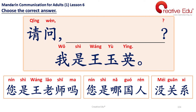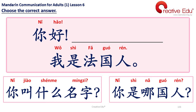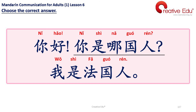Number 4: 请问，我是王玉英。Choices: 您是王老师吗？您是哪国人？没关系？Answer: 请问，您是王老师吗？Excuse me, may I ask, are you Teacher Wang? 我是王玉英。I am Wang Yuying. Number 5: 你好，我是法国人。Choices: 你叫什么名字？你是哪国人？Answer: 你好，你是哪国人？Hello, what is your nationality? 我是法国人。I am French.